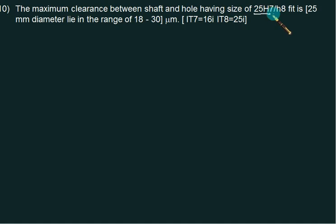This time we have 25 S7/H8. Fit is 25 mm diameter lying in the range of 18 to 30, and IT7 and IT8 are 16i and 25i. So this time very less data is given. So first of all in this problem we have to calculate diameter d using √(d1×d2), that is 18 into 30. So this value comes out to be 23.23.